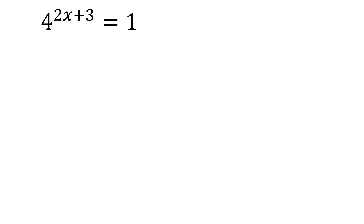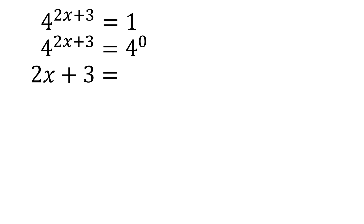Now another example: 4 to the power of 2x plus 3 equals 1. As mentioned before, we need the same base to solve for the unknown variable in the exponent. But the problem is it's equal to 1. So how do we write 1 as 4 to the power of something? We copy 4 to the power of 2x plus 3, and 1 can be written as 4 to the power of 0, because any number to the power of 0 — as long as the base is not 0 — is always equal to 1.